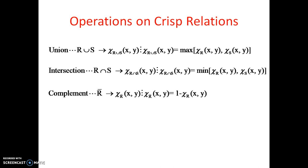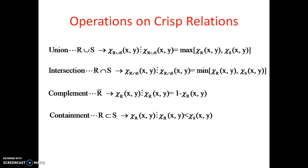The next operation is complement, denoted R-bar. It is defined as χ_R̄(x, y) = 1 minus χ_R(x, y) - very simple. The next one is containment: whether R is contained in S. This is defined as χ_R(x, y) less than or equal to χ_S(x, y). That means if S is a bigger relation and R exists within it, we say R is contained in S.